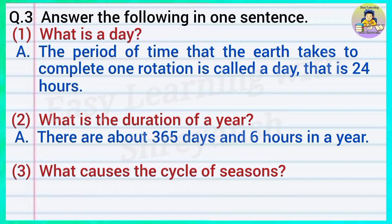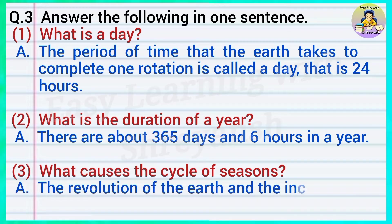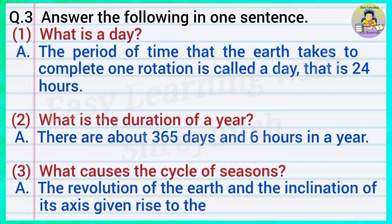Three — what causes the cycle of seasons? Answer: The revolution of the earth and the inclination of its axis give rise to the cycle of seasons.